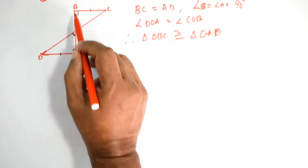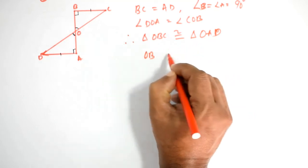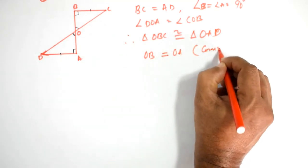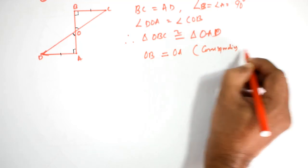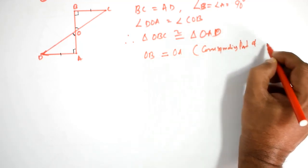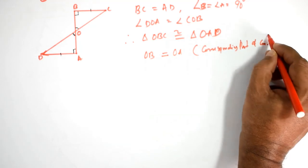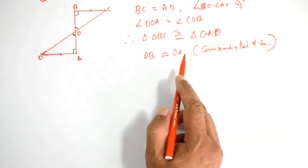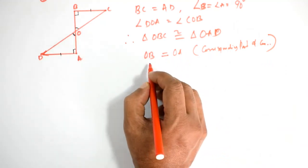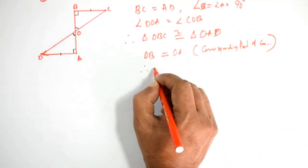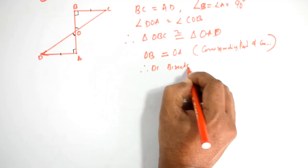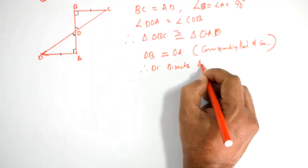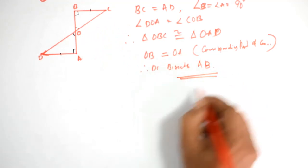OB equals OA. Corresponding parts of congruent triangles. OB equals OA. DC bisects AB. Proof is complete.